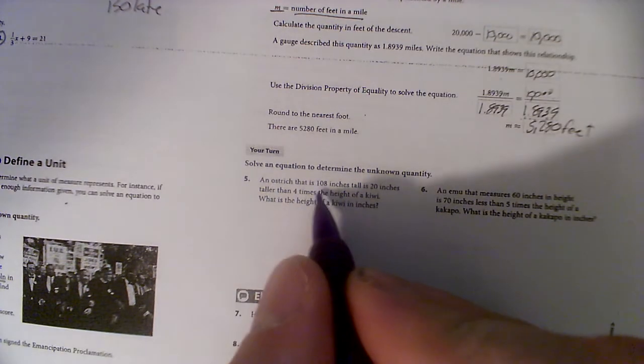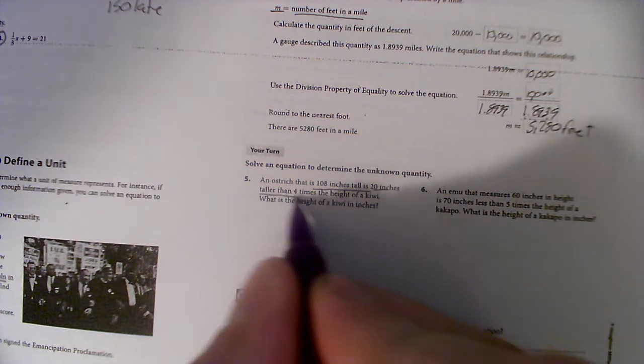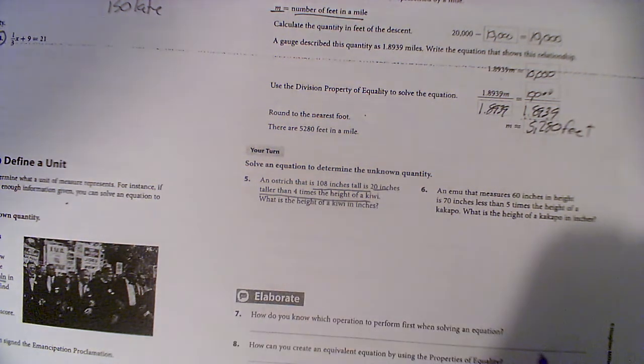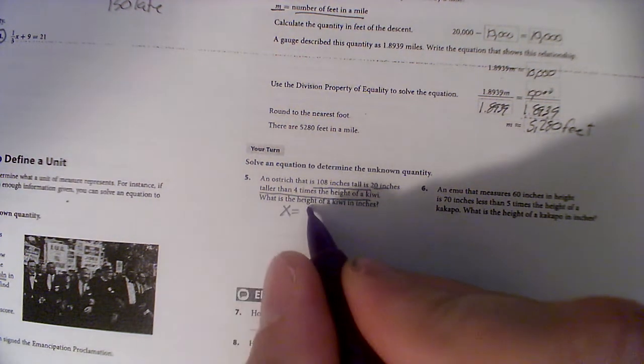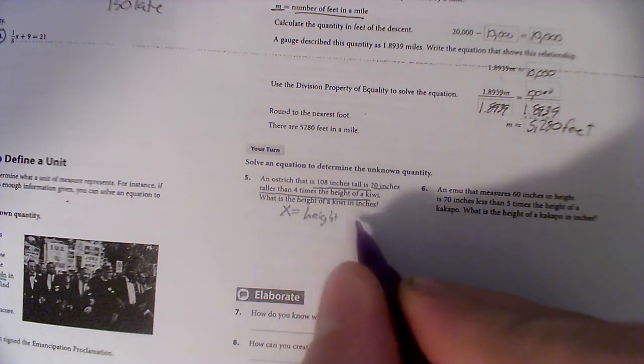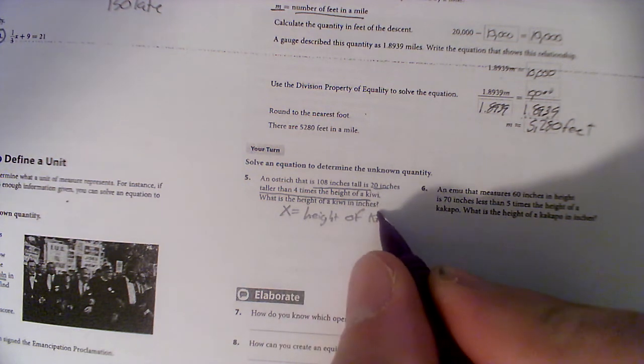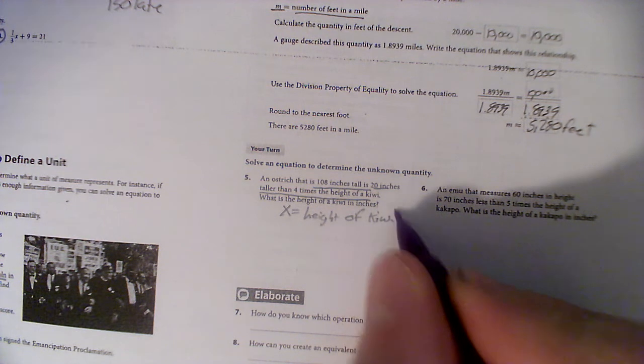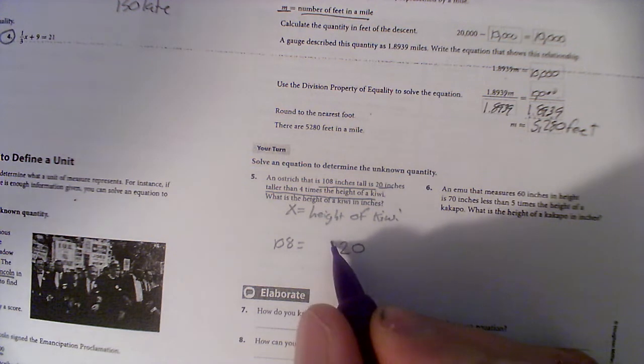An ostrich that is 108 inches tall is 20 inches taller than four times the height of a kiwi. So let's talk about that. We'll say the height of the kiwi - we'll say X equals height of a kiwi.